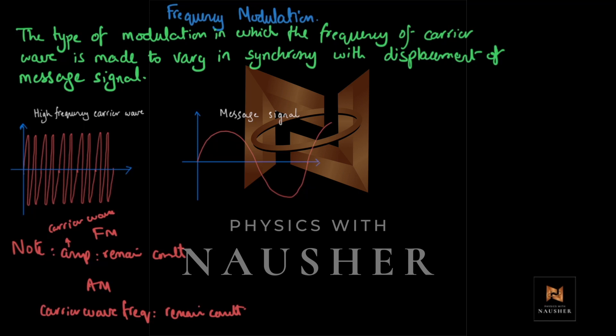When talking of AM, we don't change the frequency. But in this technique — frequency modulation — we are going to alter the frequency of the carrier wave. Let's say it's around 600 kHz. We will increase it from 600 kHz and also decrease it, according to the displacement of the message signal. But the amplitude will not change — the amplitude will remain constant and the frequency will vary.